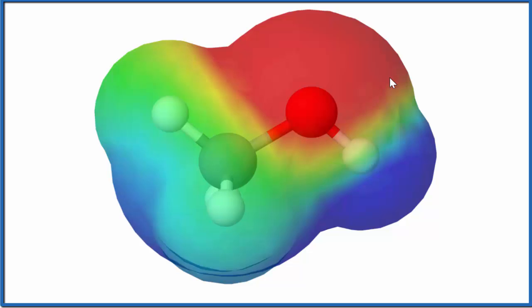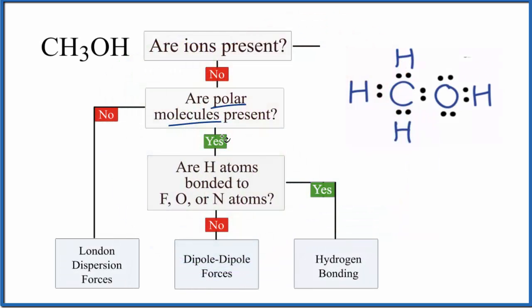So methanol is a polar molecule. Yes, we have a polar molecule. Then we ask, are the hydrogen atoms bonded to a fluorine, oxygen, or nitrogen? And right here the hydrogen is bonded to the oxygen, so yes, we end up with hydrogen bonding. So methanol, the intermolecular force for methanol CH3OH, that's going to be hydrogen bonding.